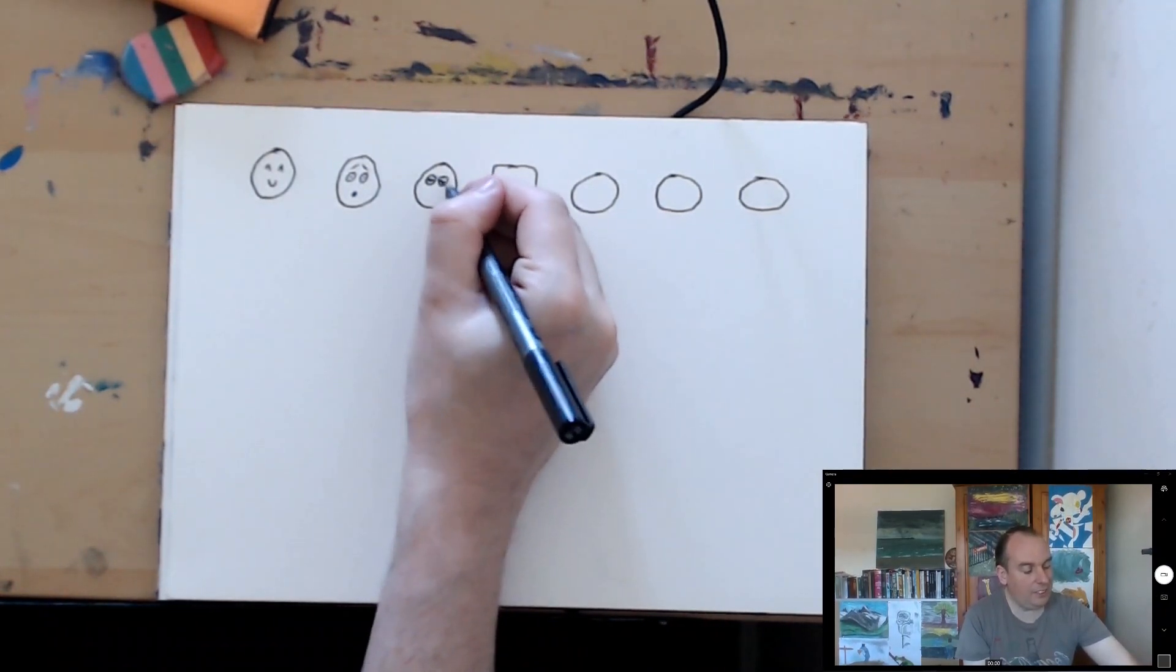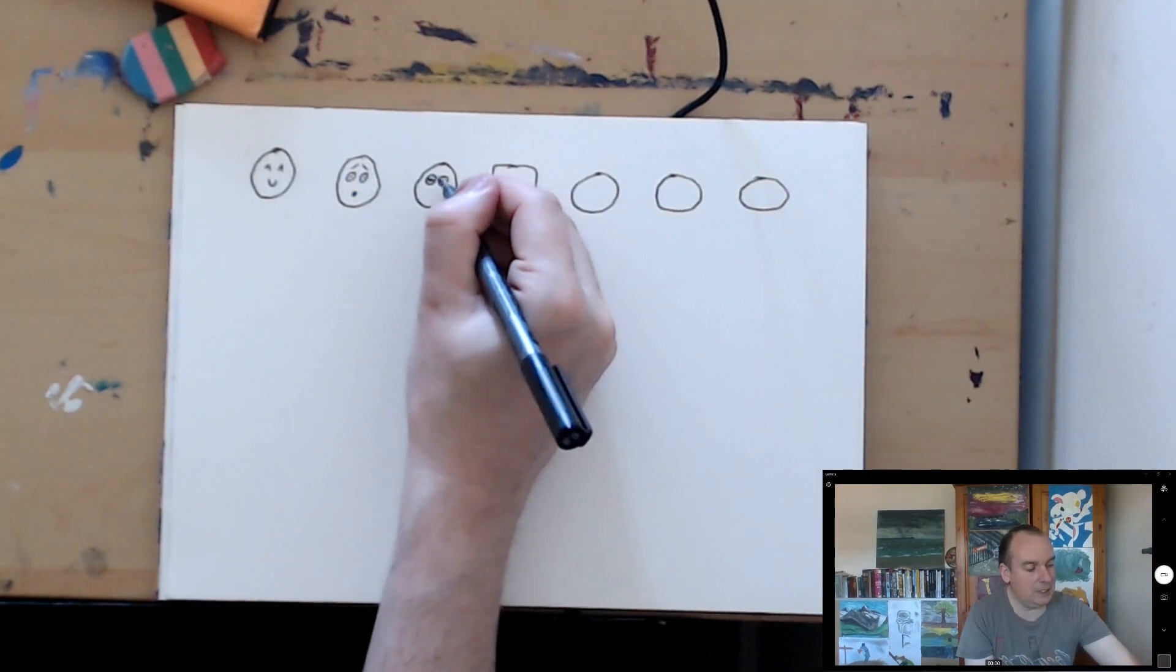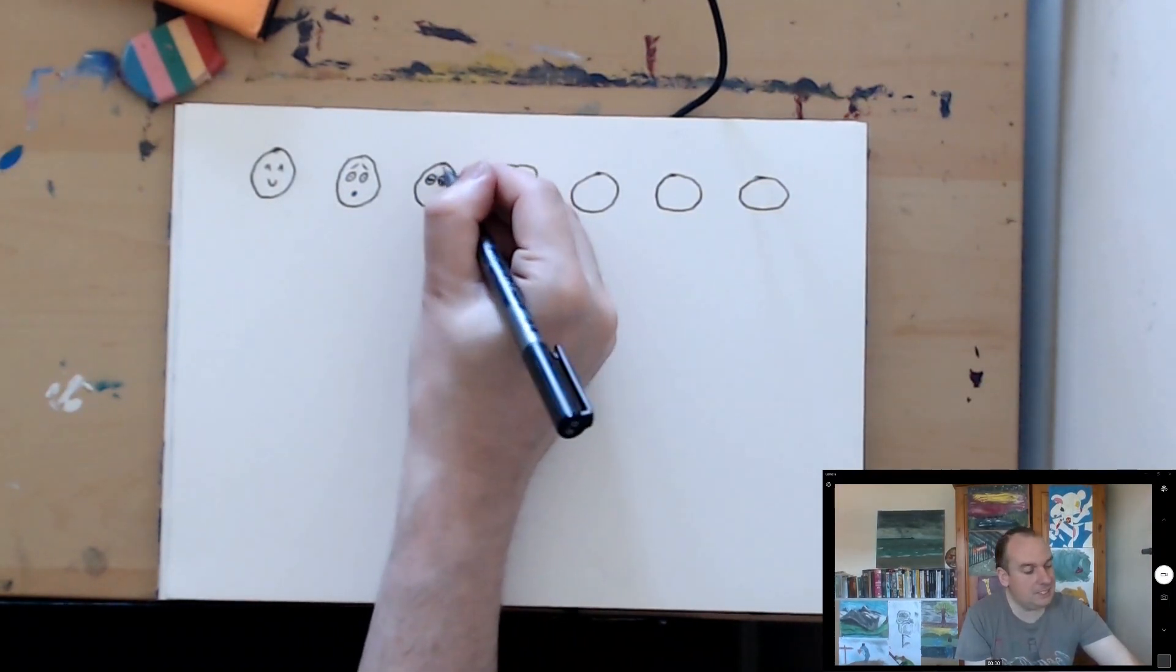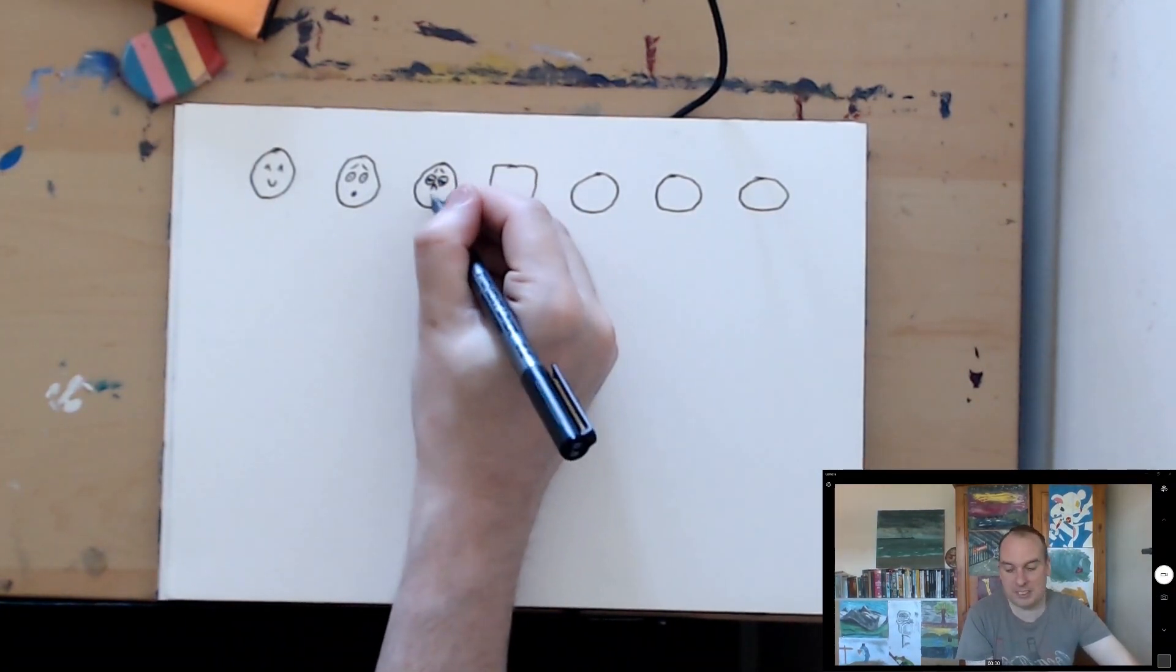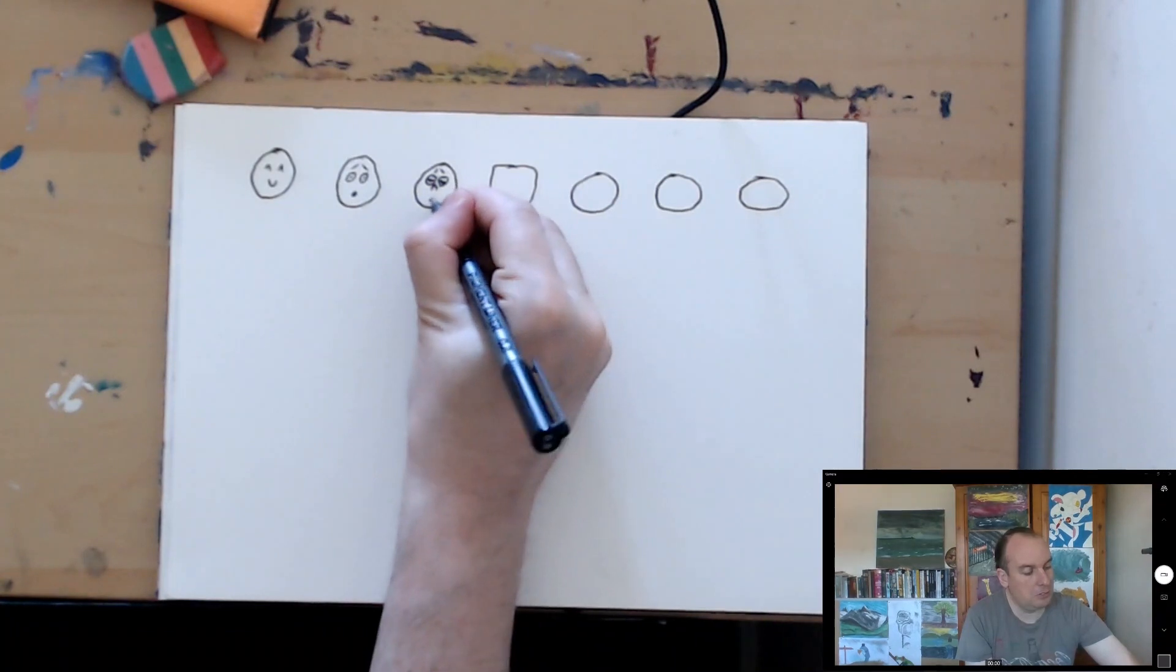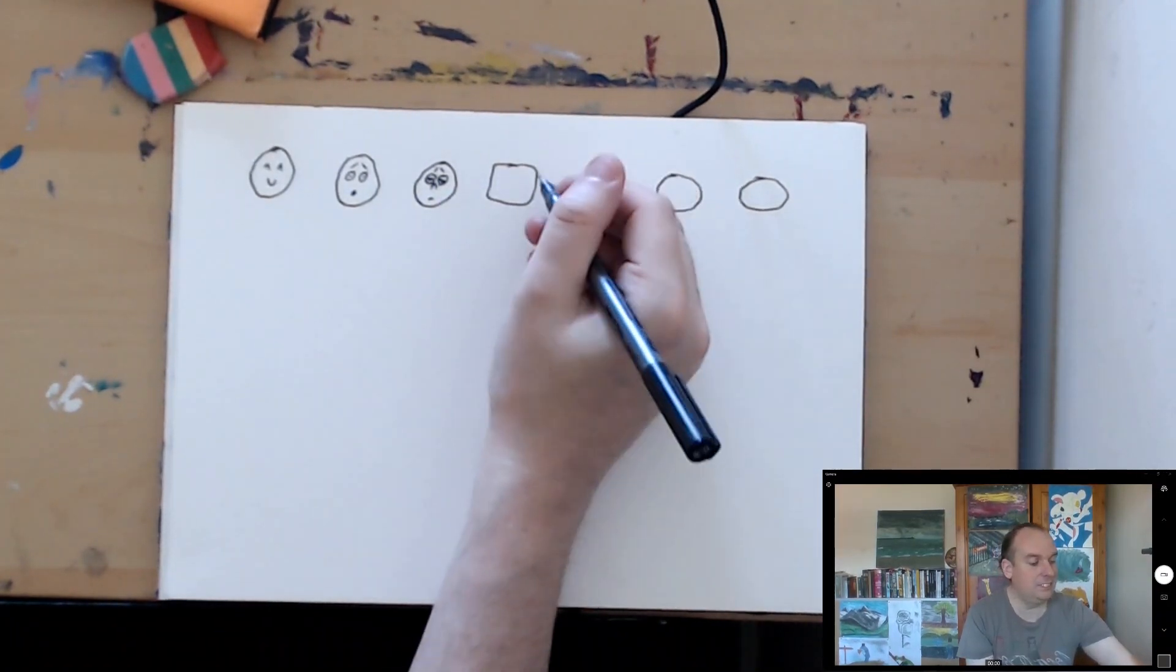Let's try this one. Notice how the eyebrows are, not the eyebrows, the eyelids are like half closed. That's because I'm going for a sleepy look. Yeah, he's very tired.